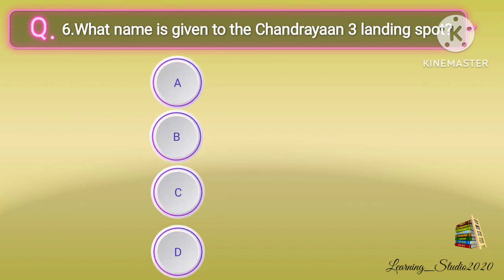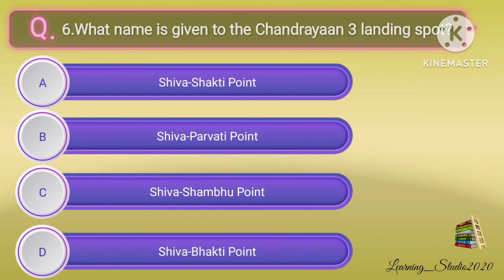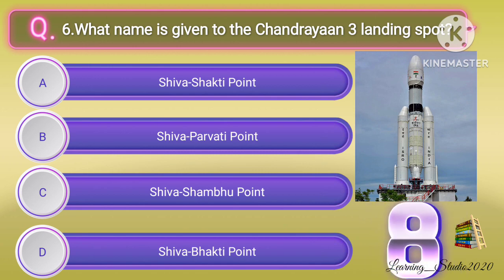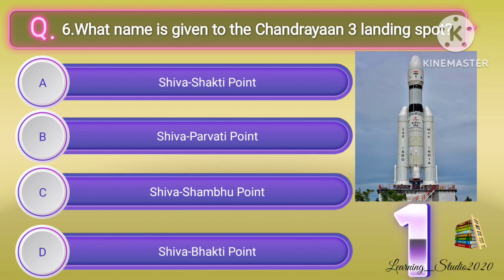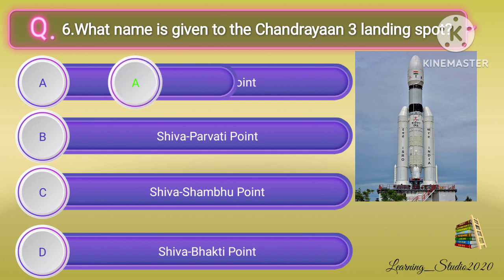What name is given to the Chandrayaan 3 landing spot? Correct answer: option A, Shiv Shakti point.